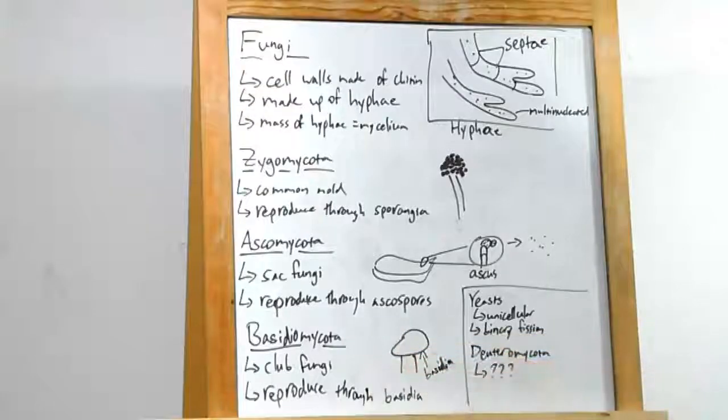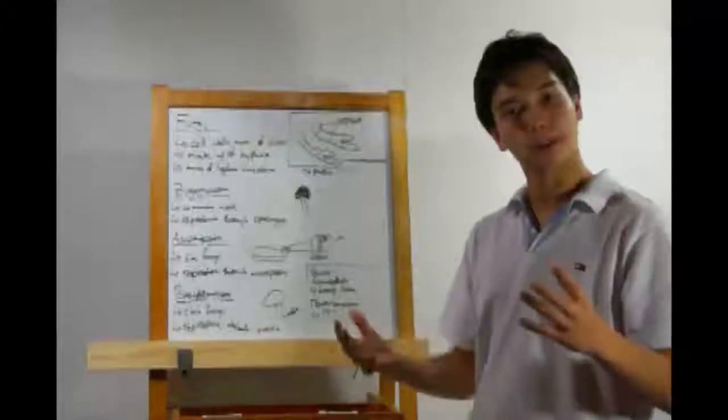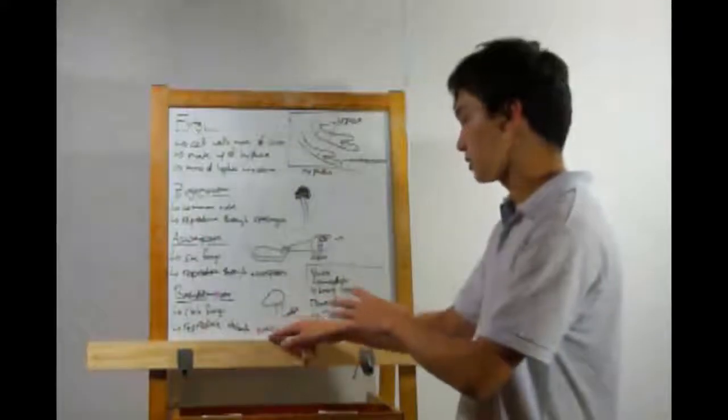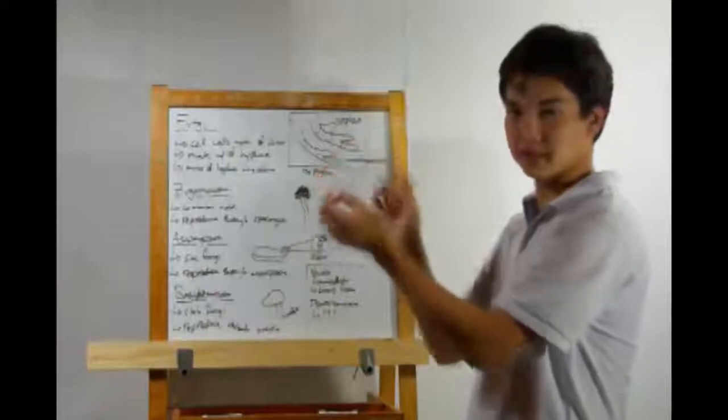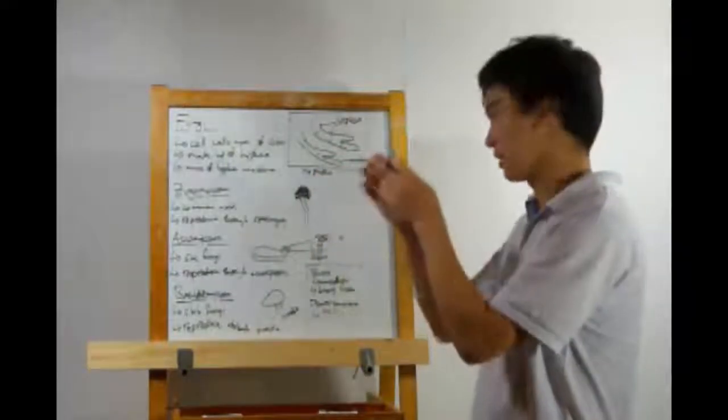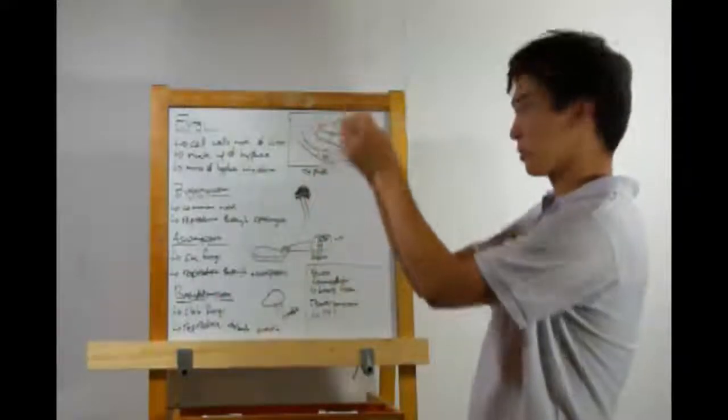Then we have basidiomycota. These are the club fungi. Yes, mushrooms belong here. These are produced through structures known as basidia. If you look at the underside of the mushroom, you'll see they have a bunch of, if you will, gills. Now, in these gills are basidia, which will release spores downwards.